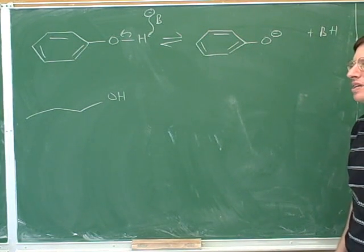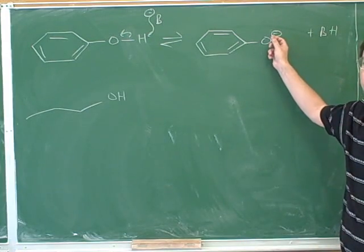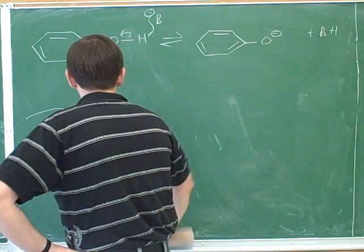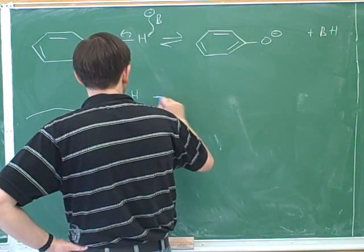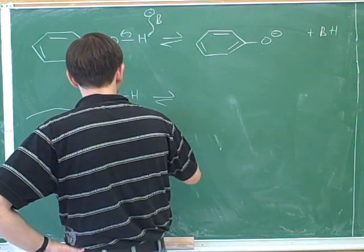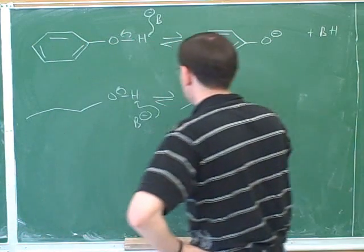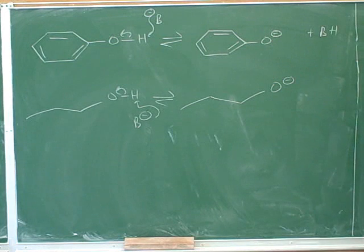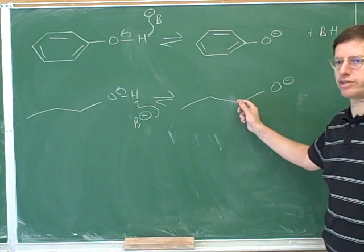Now, if this is a good acid, that must mean that it doesn't mind having this negative charge. That's right. This negative charge is more stabilized than for a normal alcohol. Why is this negative charge more stabilized than on a normal alcohol? Because of the resonance that allows in the ring for the negative charge to be spread throughout the whole. Good. You can see that in a normal alcohol, there's no resonance structures at all.